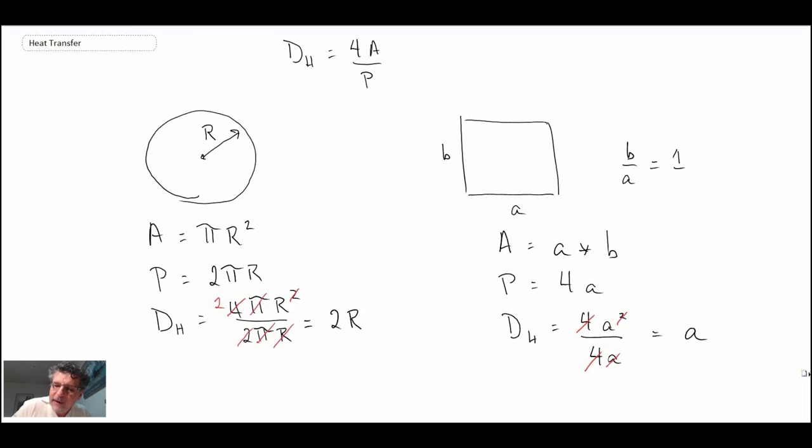For fully developed laminar flow, there are tables that exist that will show values of the Nusselt number as well as a pressure drop characteristic for different types of shapes, different aspect ratios, triangular cross-sections, all kinds of different things. If you look in any heat transfer textbook you'll probably find a table with these values in it.